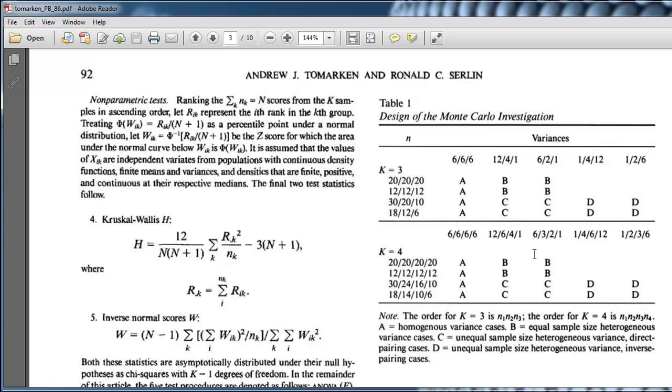These are data. What they did is they simulated data for which there should be no differences whatsoever in the means. So if a statistic finds a statistical significance, then it's making a mistake.